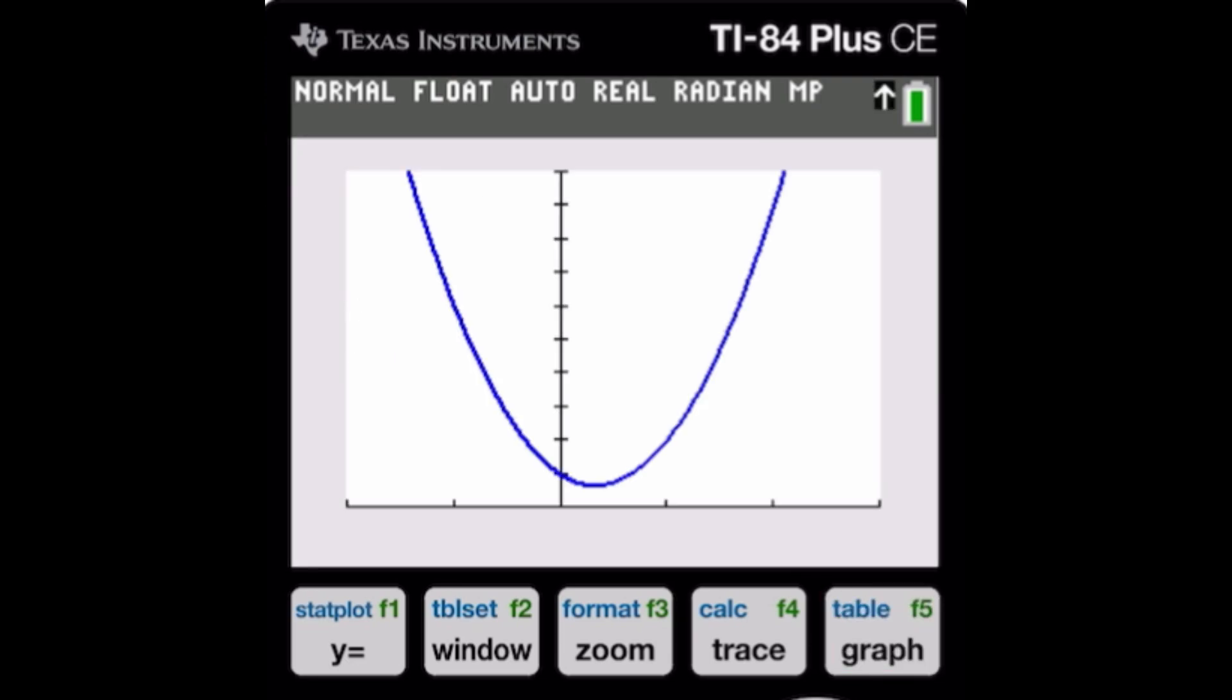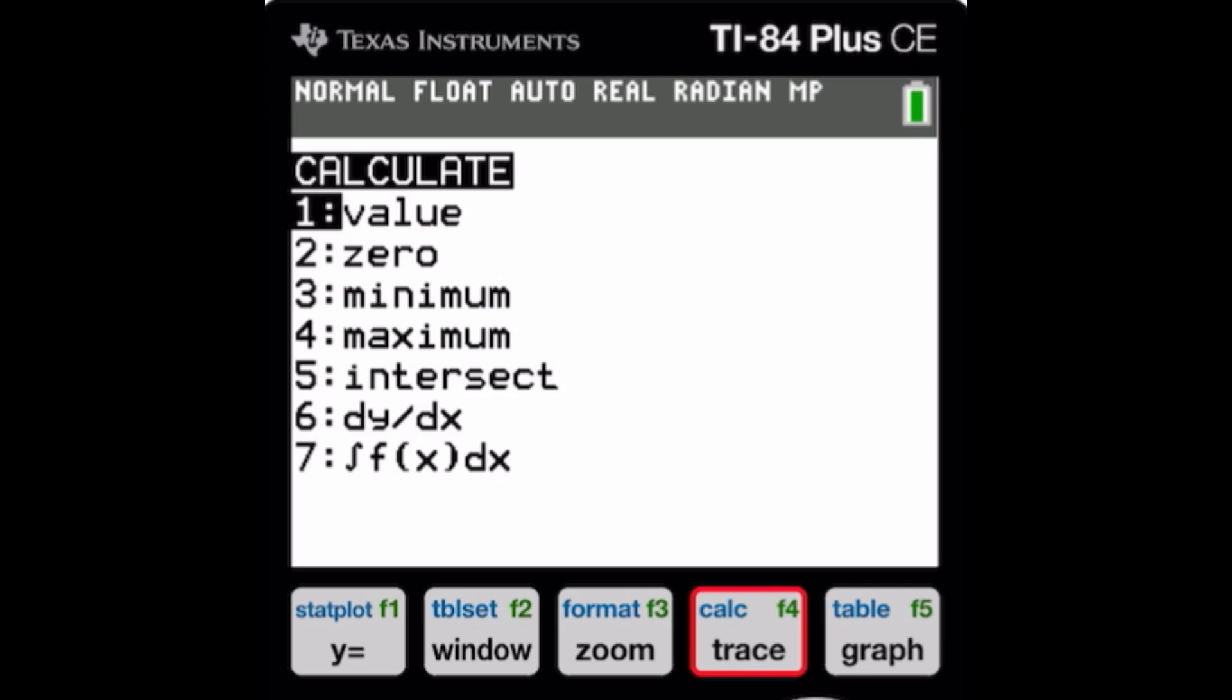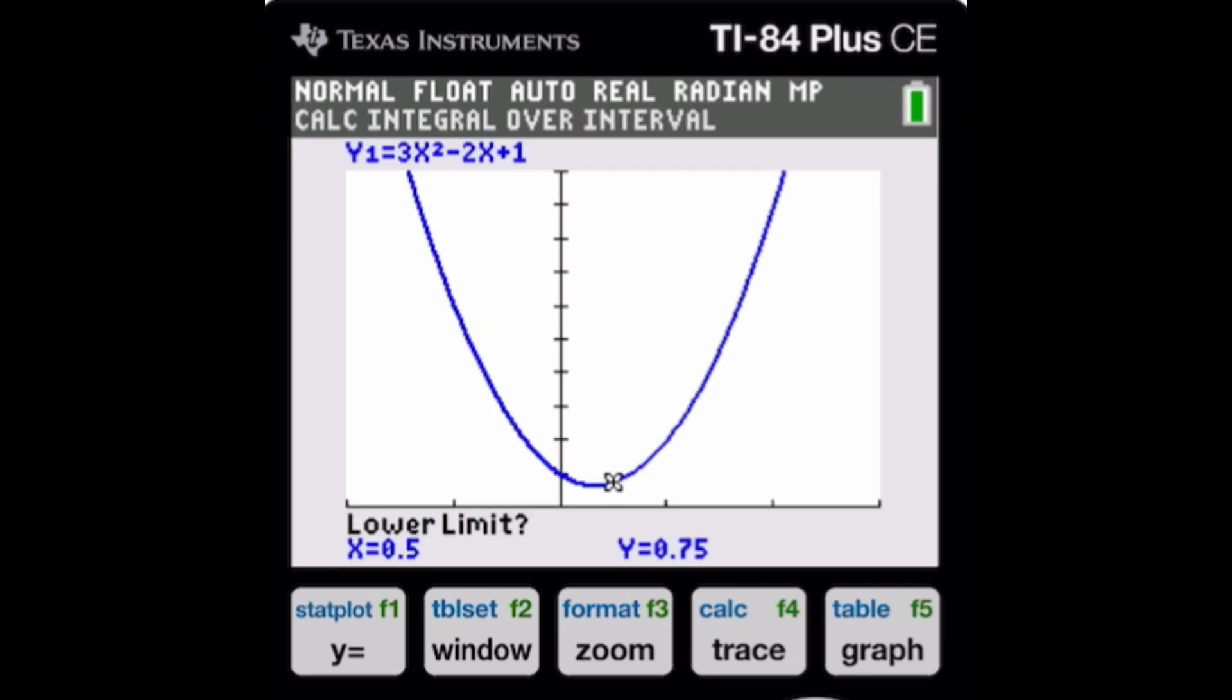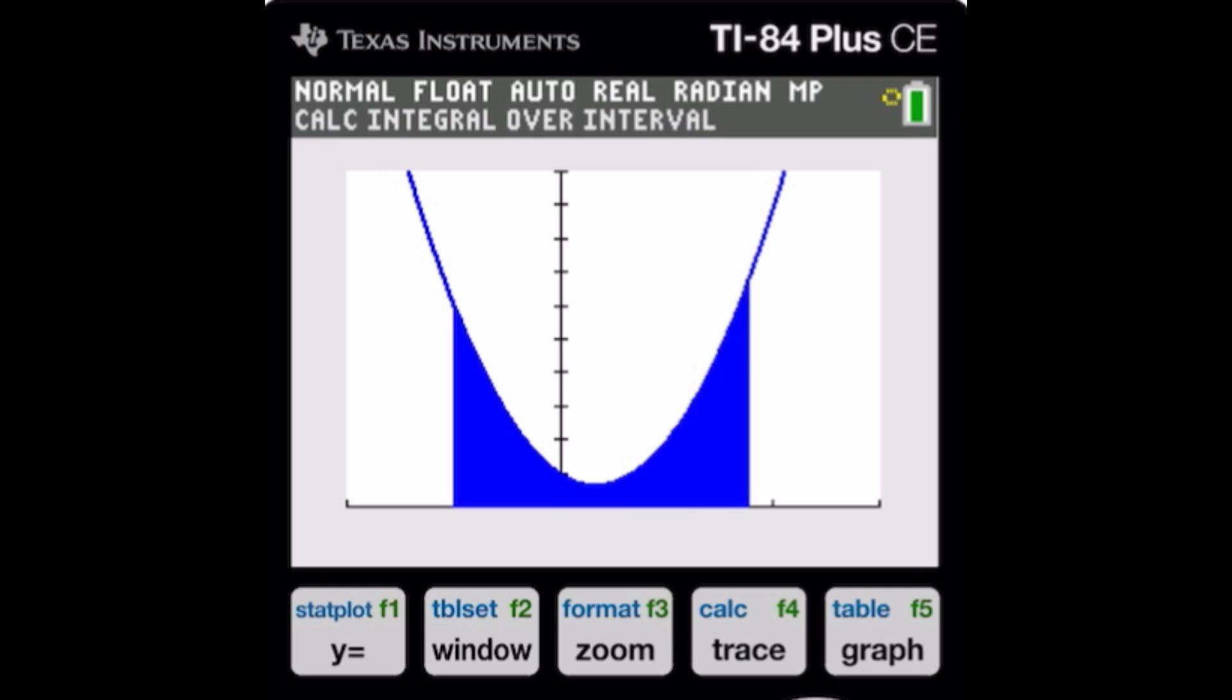So I'm going to go ahead and put graph. Now I go to second trace and I basically want option number 7. So make sure you press 7. And you want the lower limit to be negative 1. Press enter. And then my upper limit is 2. Press enter. And voila! That's exactly what you want. You want the area bounded by the graph. So the area underneath the curve bounded by the x-axis from the interval negative 1 to positive 2. And the area is 9.